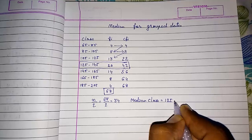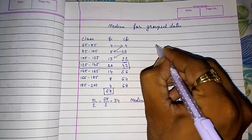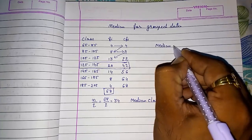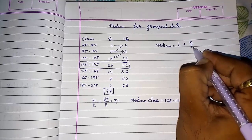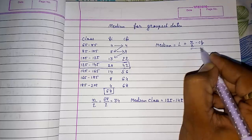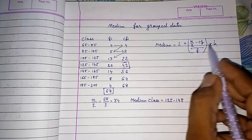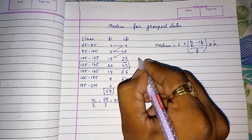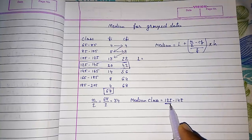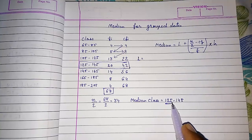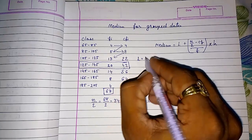Now the formula for finding median: Median equals L plus n by 2 minus cumulative frequency divided by frequency into H. One by one I will explain. Capital L means the lower limit of the median class. This is your capital L, that is 125.